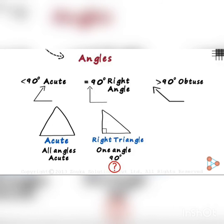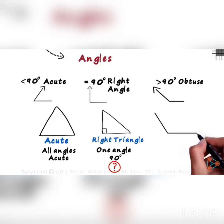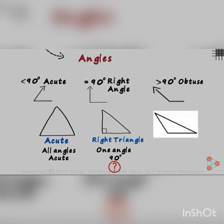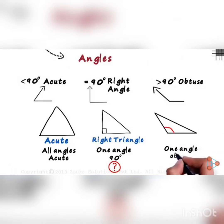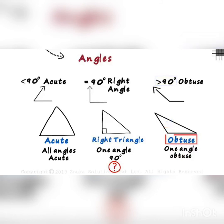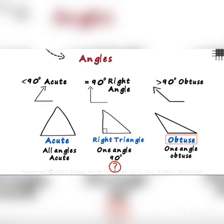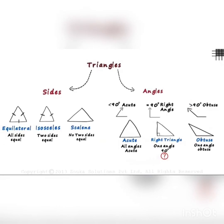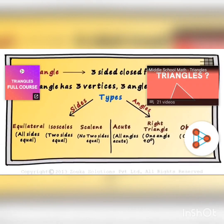The next is the obtuse angle triangle. In this triangle, one angle is obtuse and the rest of the two angles are acute, so this is called an obtuse angle triangle. Obtuse angle means the measure of an angle is more than 90 degrees. This is all about triangles based upon sides and based upon angles. Now we will check the summary of all about triangles.